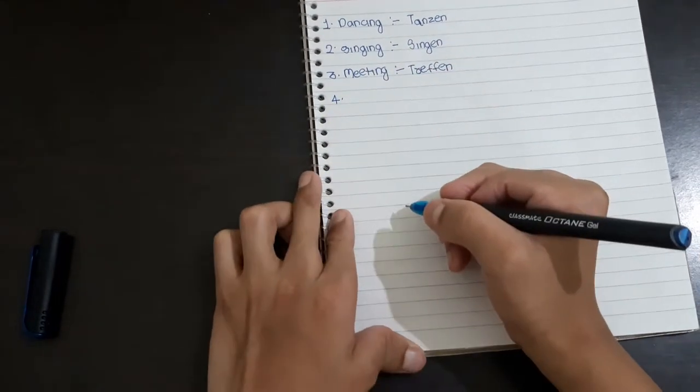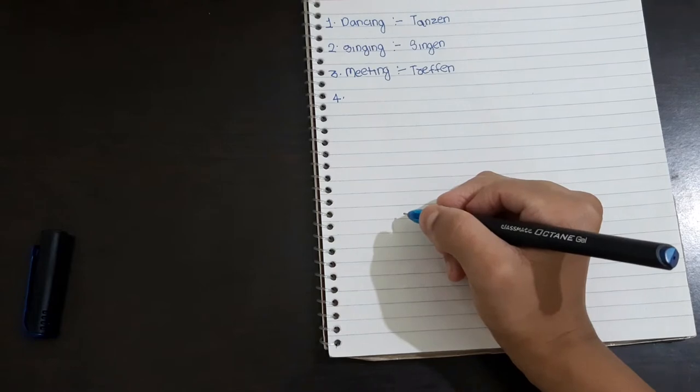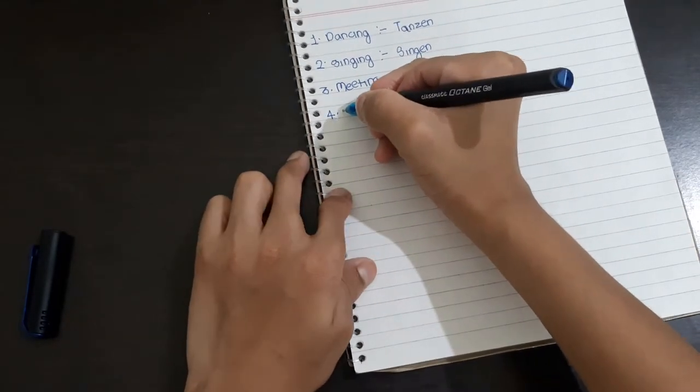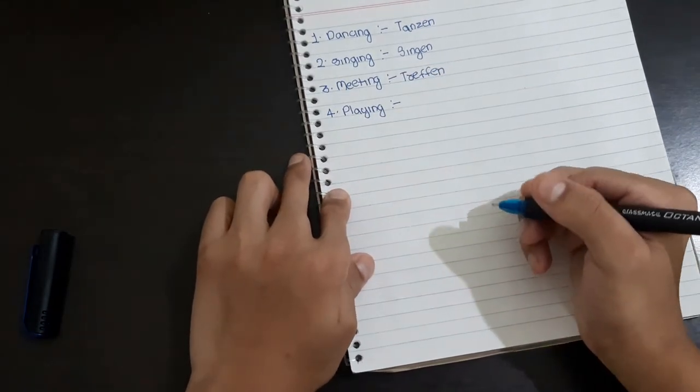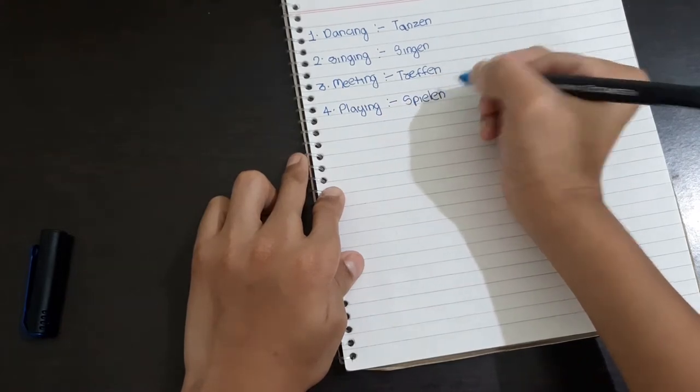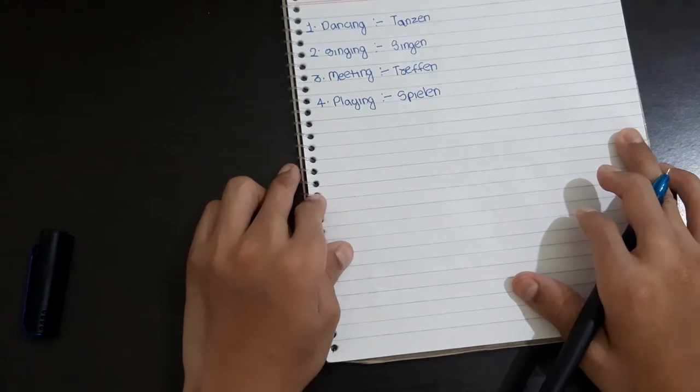The fourth one is playing. So playing is Spielen. The spelling of Spielen is S-P-I-E-L-E-N.